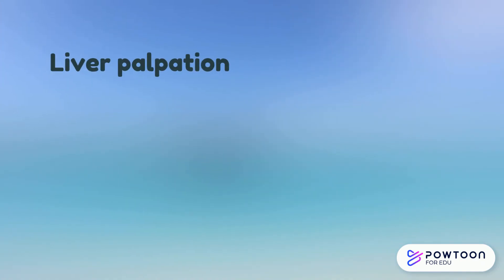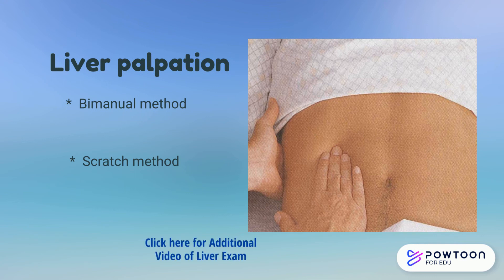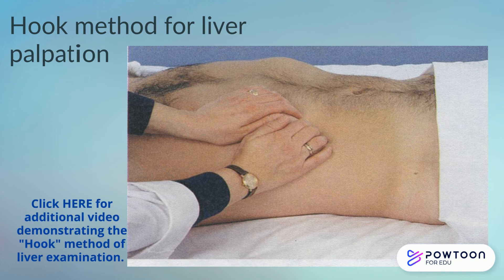To palpate the liver, the most common method is the bimanual method. You place your left hand under the bottom of the rib cage on the posterior side of the patient, and with your right hand you palpate up under the rib cage, as shown in the picture. Another technique, which may be helpful with obese clients, is the hook method. You place your fingers at the edge of liver dullness when you percuss, and as the client takes a deep breath, you slowly move your fingers up to feel for the liver edge.